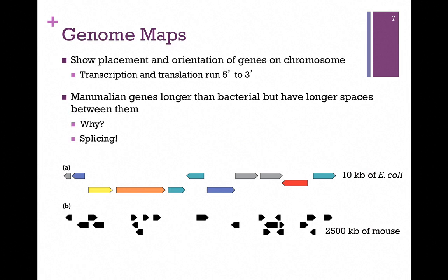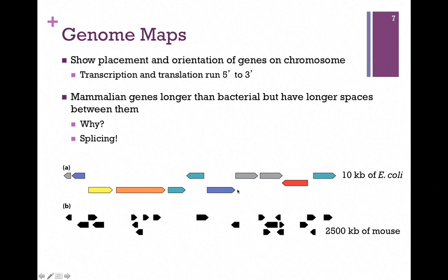Now that we have our gene sequence and the number of genes, we can do a genome map where we show the placement and orientation of genes on the chromosome. Remember, transcription and translation run 5' to 3'. These block arrows indicate the direction of transcription and translation, so they point from the 5' to the 3' end.